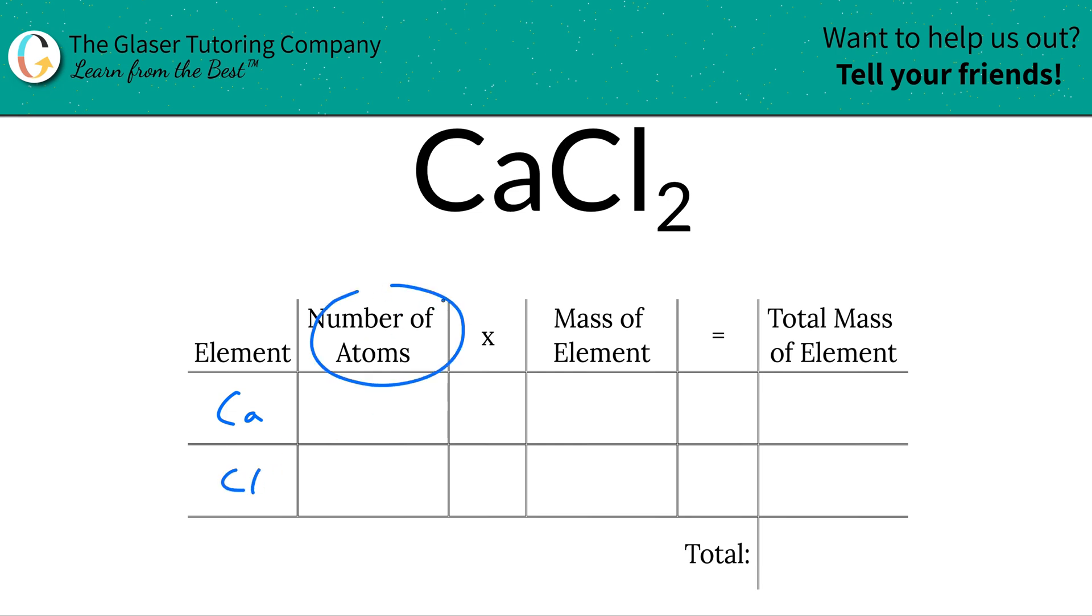Then I'm going to write down the number of atoms. This is where the subscripts come into play. At the bottom of calcium there is an invisible one, and that means there's one calcium. Chlorine has a subscript of two, and that means there are two chlorine.